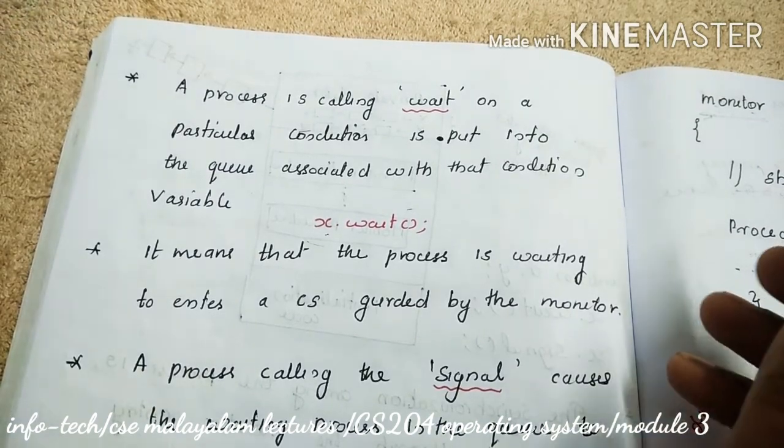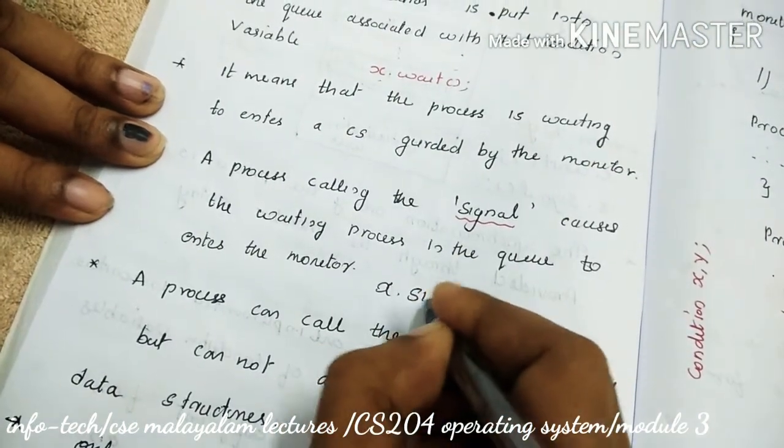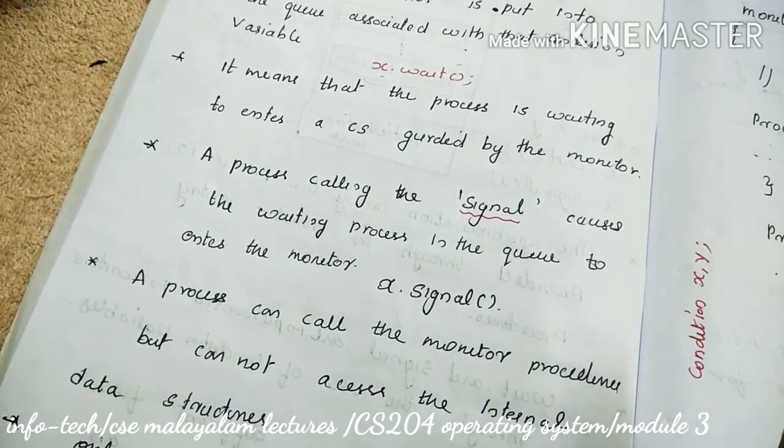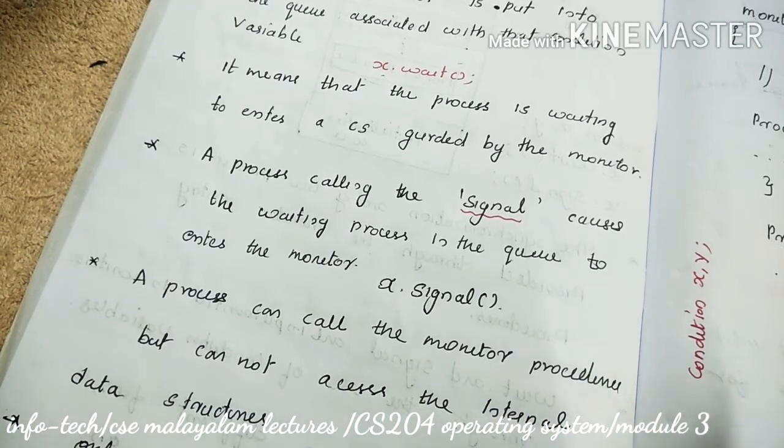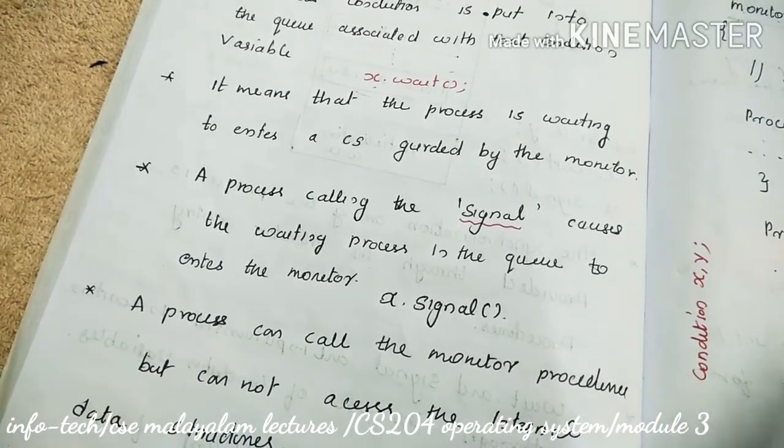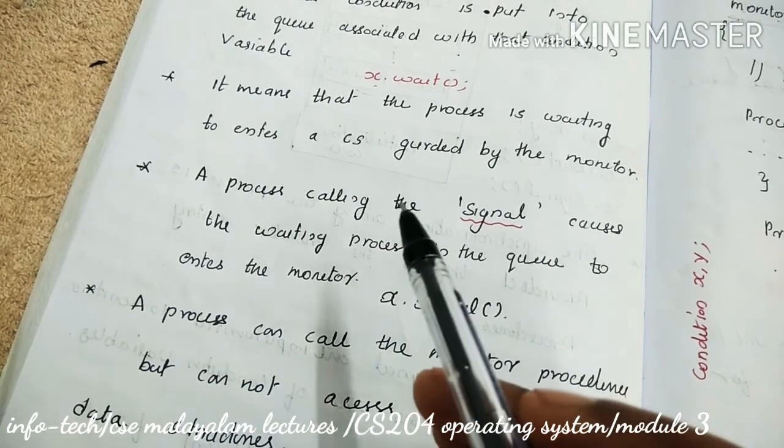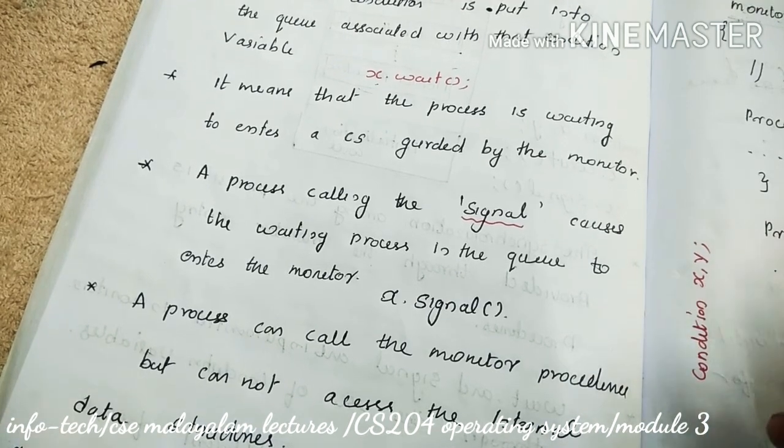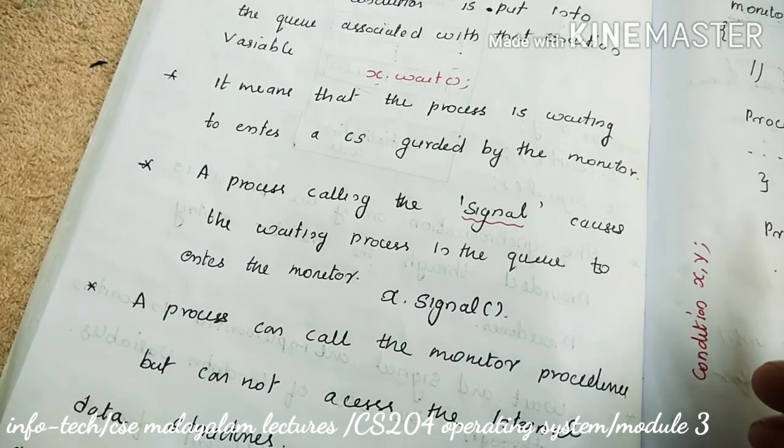Signal environment process on, for example, x.signal. The process calls that a particular condition is satisfied. Say that a condition variable in the queue will have a process in it. If there is any process in the waiting queue, that can invoke the process from the queue.